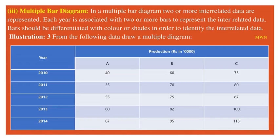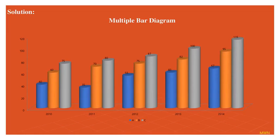Multiple bar diagram: in this diagram two or more bars are there to represent the data. Here we have taken production of A, B, C products for 2010 to 2014. You can find how it is represented with different colors. C has the highest value, while A has the lowest value.